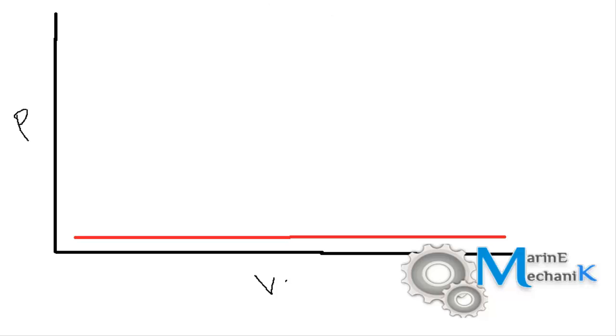After that, you've got to blow through the indicator cock so that no carbon deposits are there. Then you screw in the indicator instrument onto the indicator cock. After that, you pull the card out and attach it through the pulley mechanism.